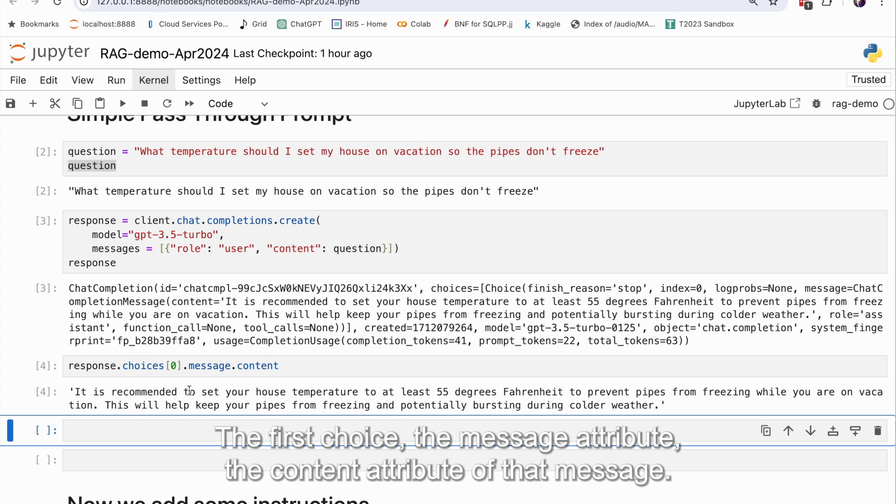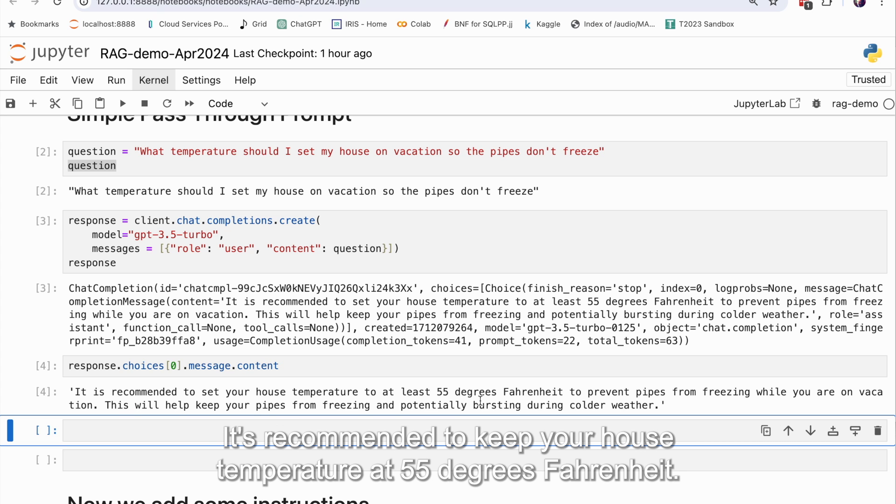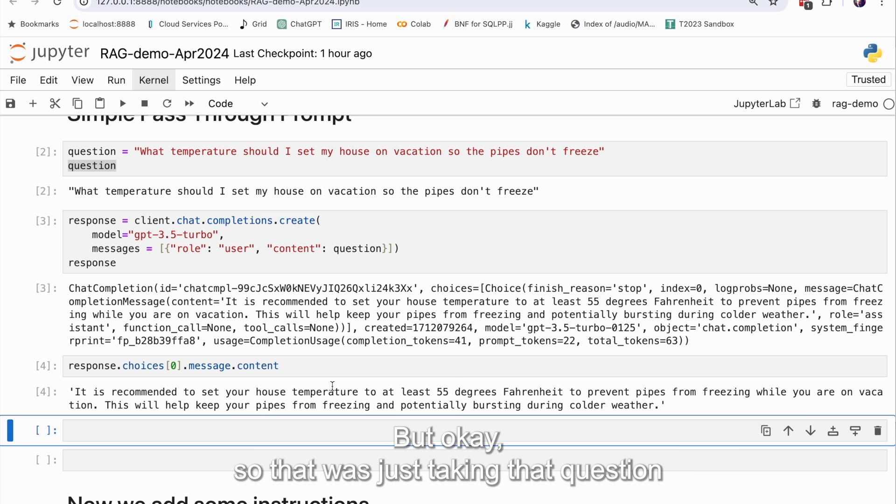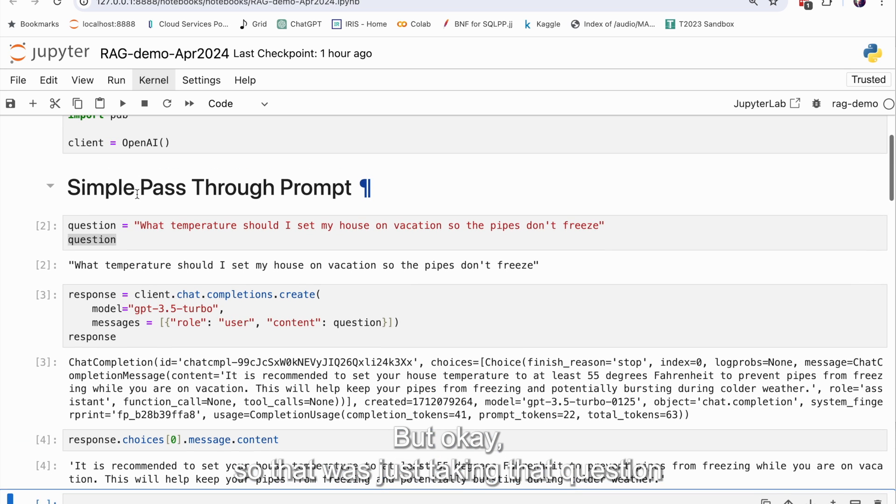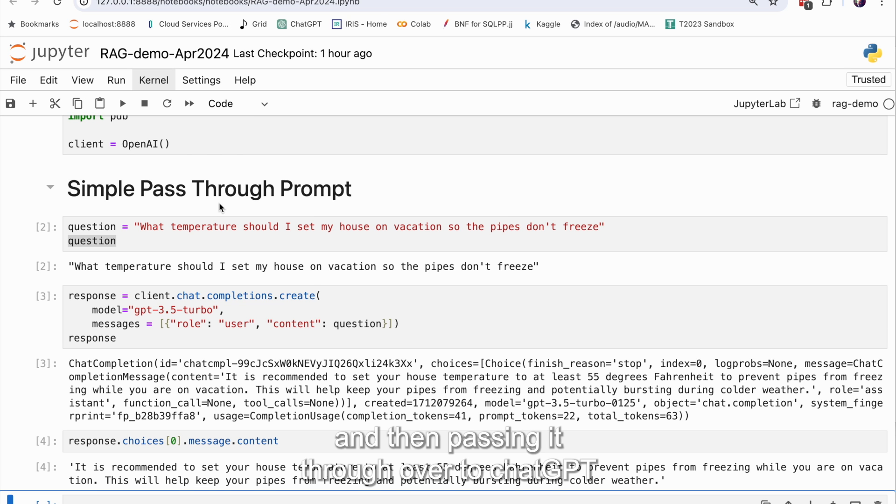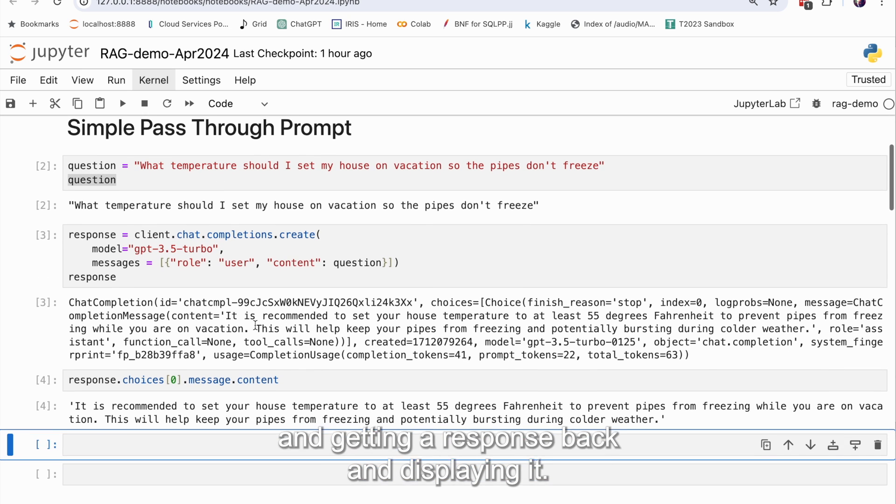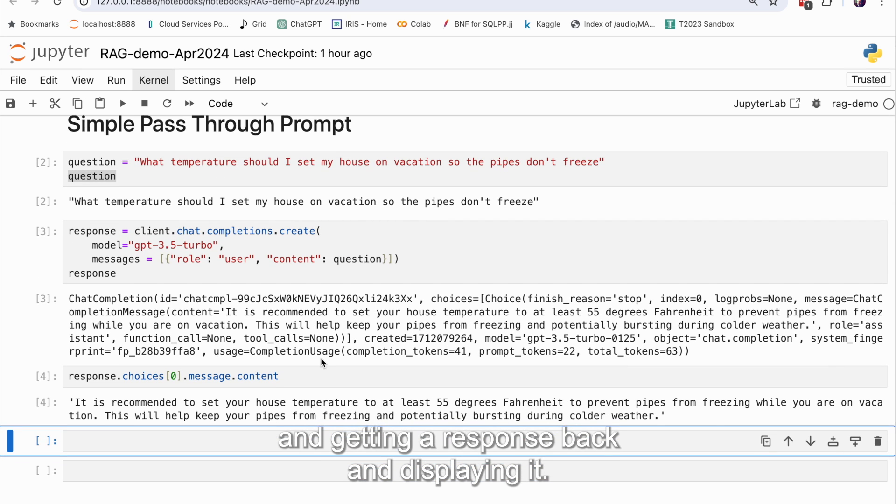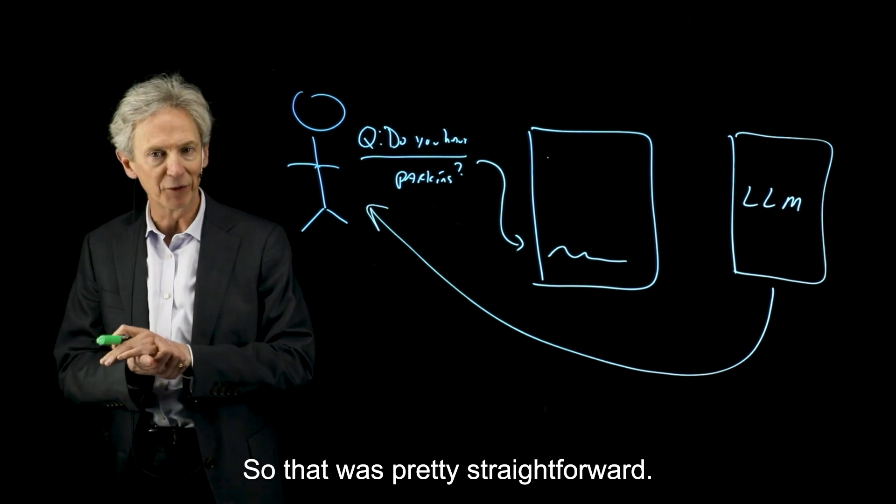It's recommended to keep your house temperature at 55 degrees Fahrenheit. So that was just taking that question and then passing it through over to chat GPT and getting a response back and displaying. All right. So that was pretty straightforward.